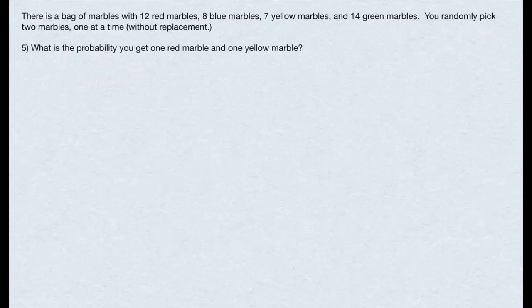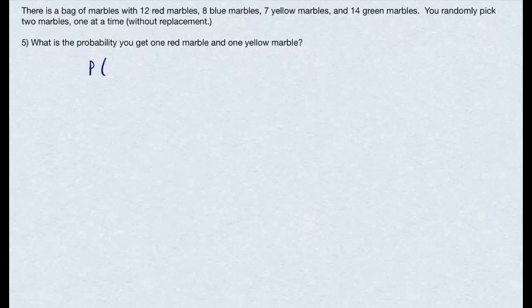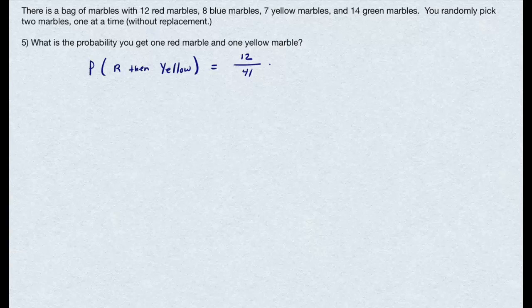There's another kind of problem I want to do, though. I want to talk about the probability of getting one red marble and one yellow marble. It seems that this would just be the probability of getting a red marble, and then a yellow marble. We've done these calculations before. This would simply be 12 divided by 41 times 7 divided by 40. The trouble is, that's the probability of getting a red marble and then a yellow one.